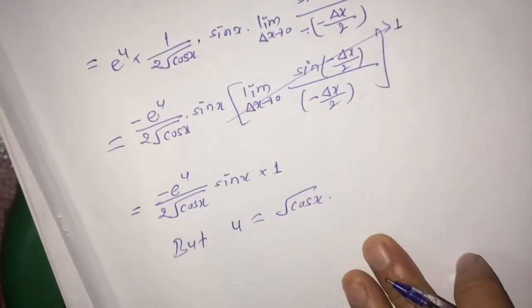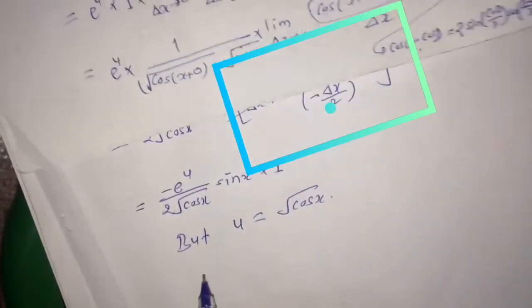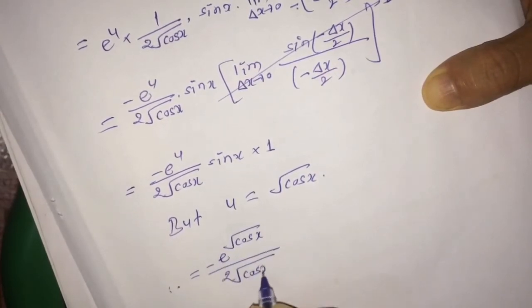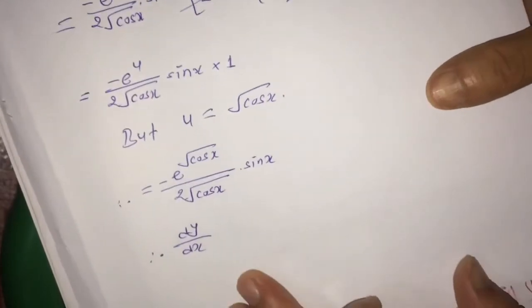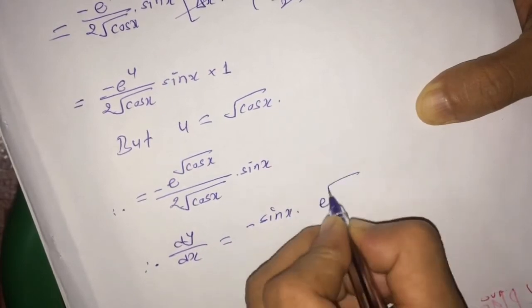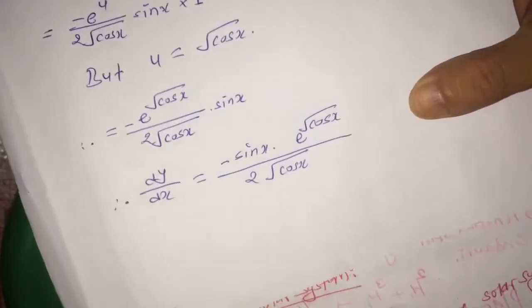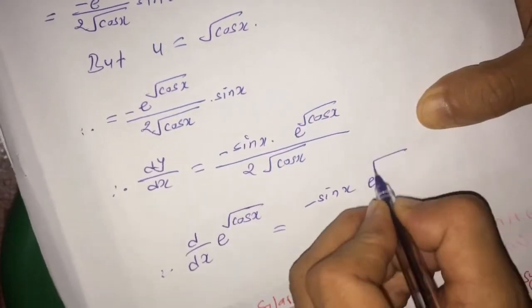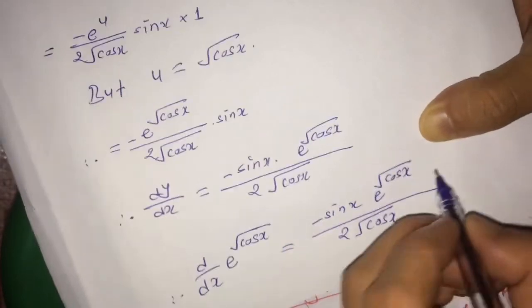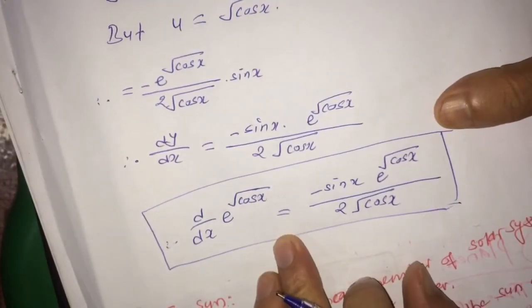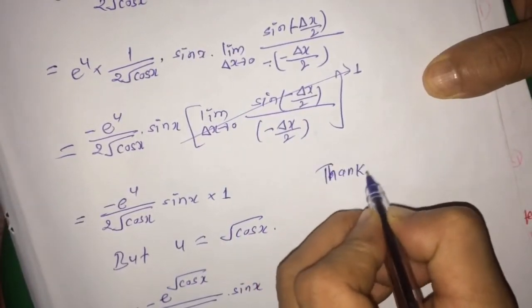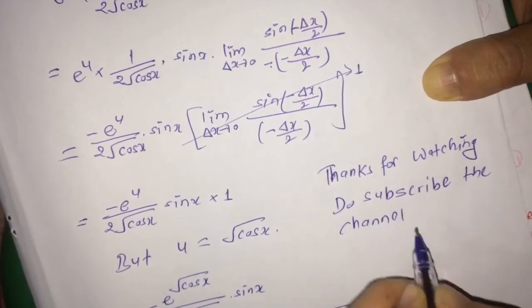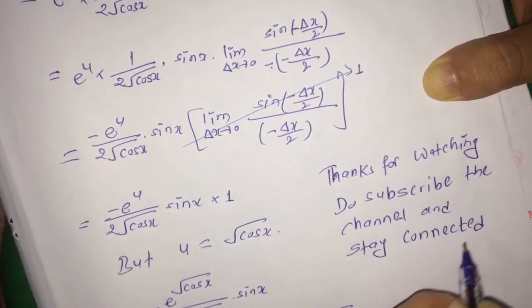Using the standard limit result that sin(−δx/2) divided by (−δx/2) equals 1, and substituting u = √(cos x), we get dy/dx equal to minus sin x divided by 2 root under cos x, times exponential root under cos x. So the derivative of exponential root under cos x is equal to minus sin x times exponential root under cos x, whole divided by 2 times root under cos x. Thanks for watching, do subscribe the channel and stay connected with us.